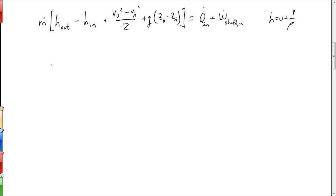Specifically, we know that the difference in enthalpy H out minus H in is going to be equal to C sub P for air times T out minus T in, for an ideal gas.